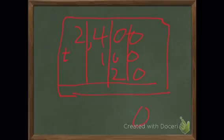So 0 plus 0 plus 0 equals 0, 0 plus 6 plus 2 equals 8, 4 plus 1 equals 5, and 2 plus nothing equals 2. That's 2,580, so 4 times 645 equals 2,580.